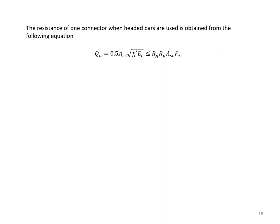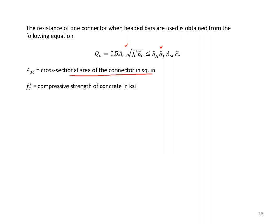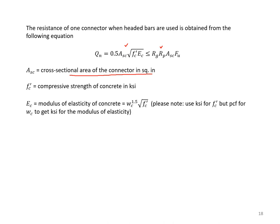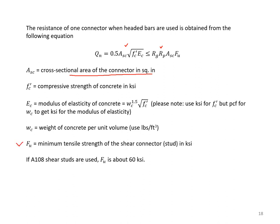The resistance of one headed stud connector QN is obtained from an equation with two terms: one depending on concrete strength and one depending on the strength of the headed bar. ASC is the cross-sectional area of the connector in square inches. F-prime-c is the compressive strength of concrete. EC is the modulus of elasticity of concrete, which depends on the weight of concrete. FU is the tensile strength of the shear connector in ksi; for A108 shear studs, FU is about 60 ksi.